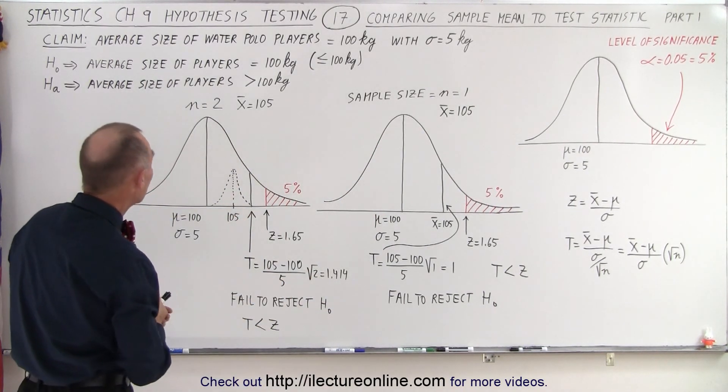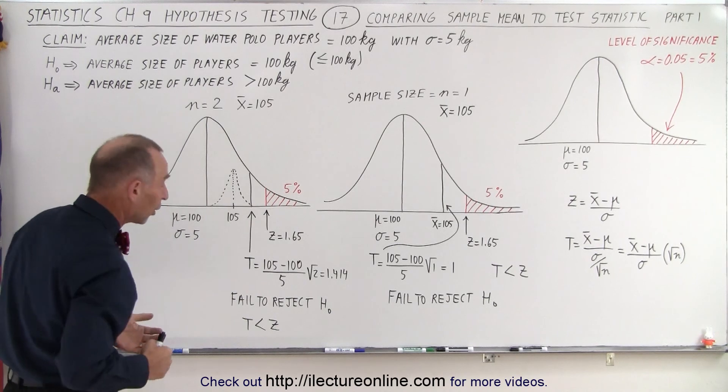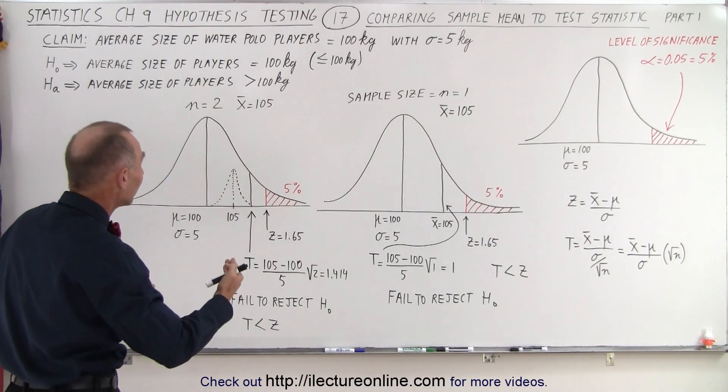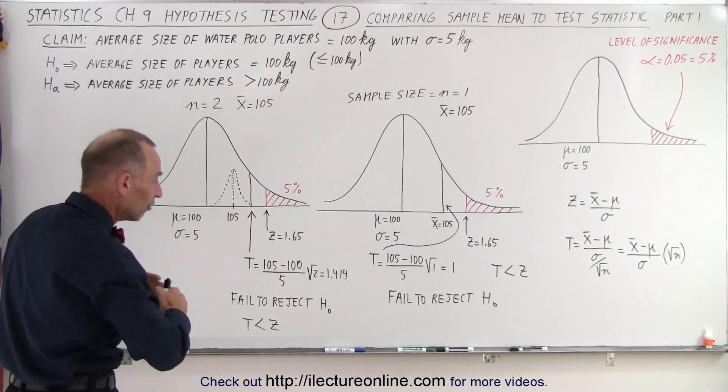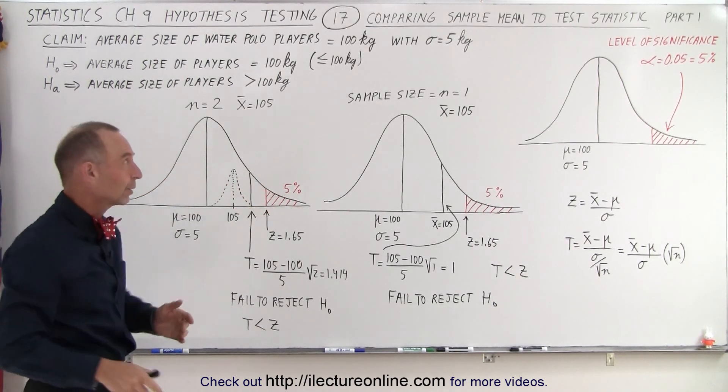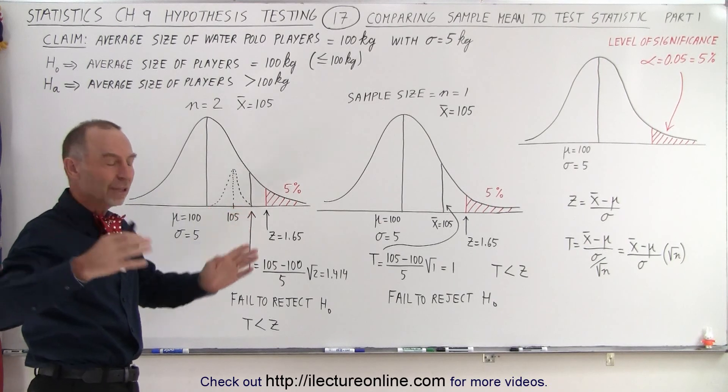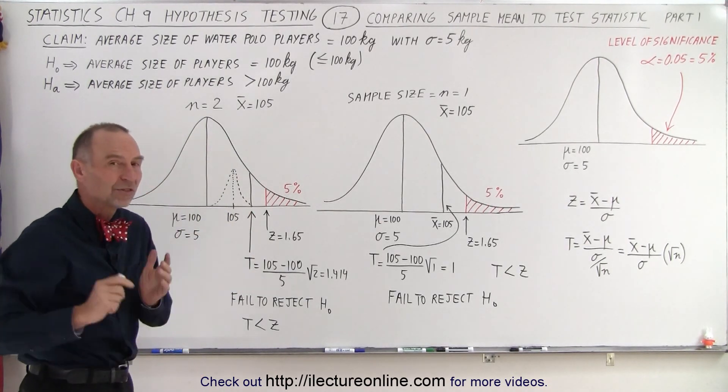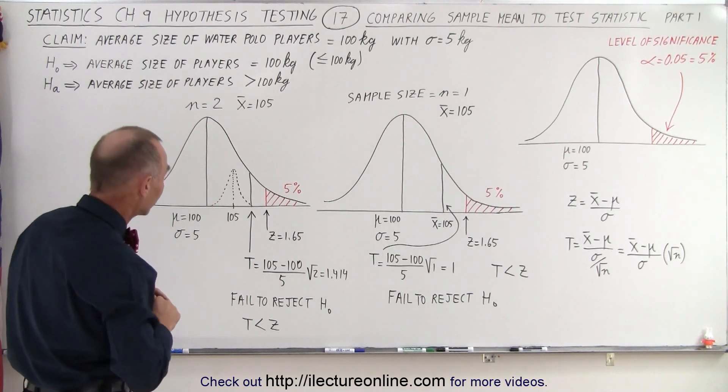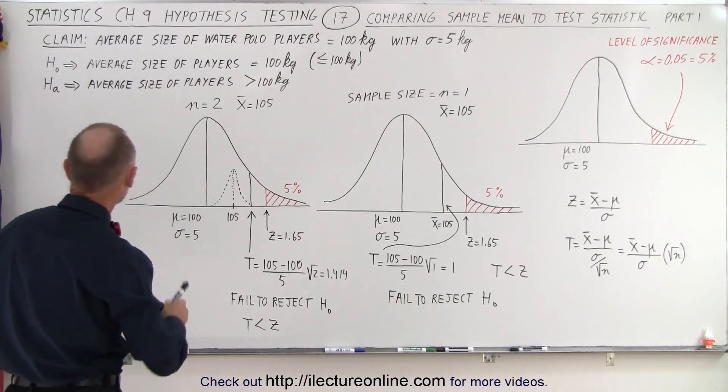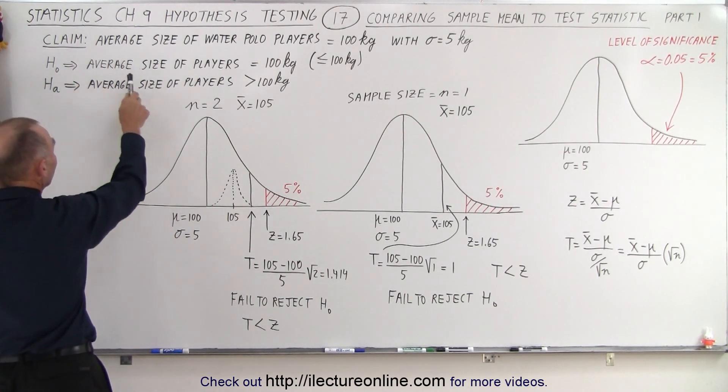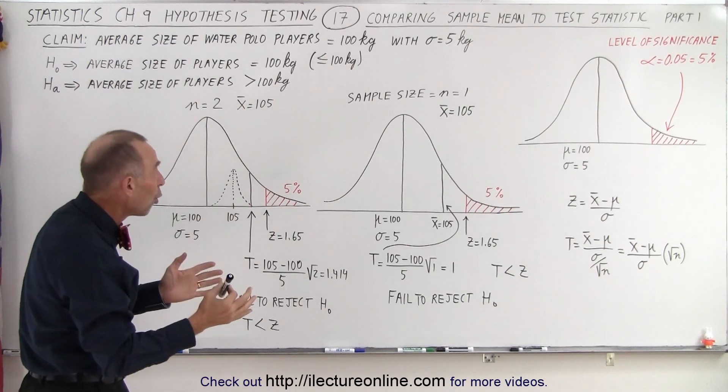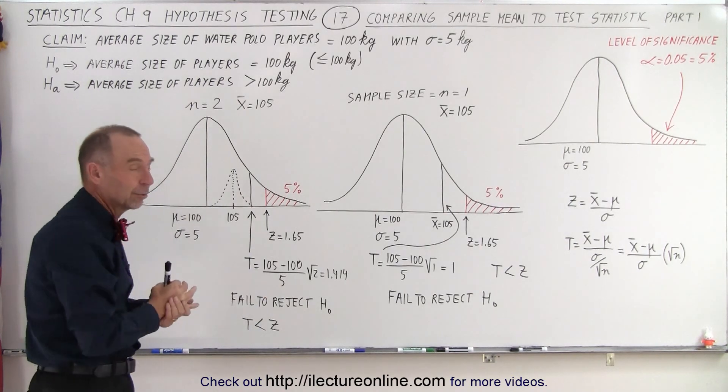The example we're going to use here is the size of water polo players. Let's say that we claim that the average size is 100 kilograms. So of all the water polo players around the world, if we take the complete population and we find the mean of that population, we claim it's 100 kilograms with a standard deviation of 5 kilograms. Our null hypothesis is that the average size of the players is equal to 100 kilograms, implying it's 100 or less than 100 kilograms.